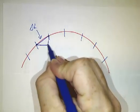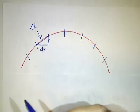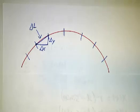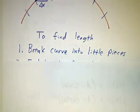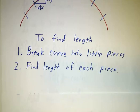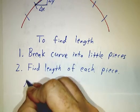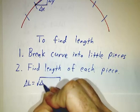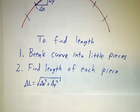Of course, that straight line went a distance Δx horizontally and Δy vertically. And so the length of each piece by the Pythagorean theorem, Δl is the square root of Δx² + Δy².